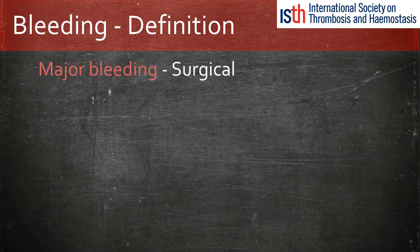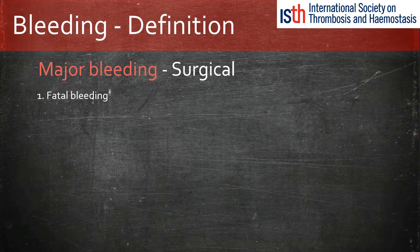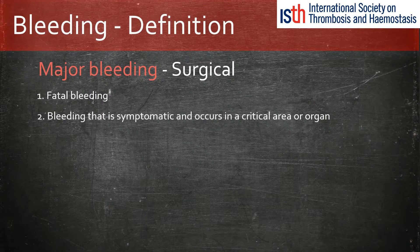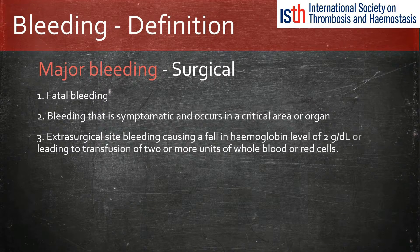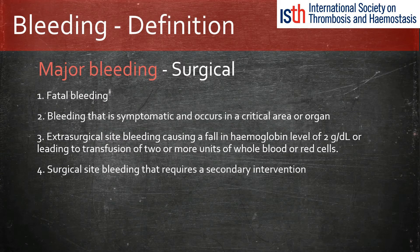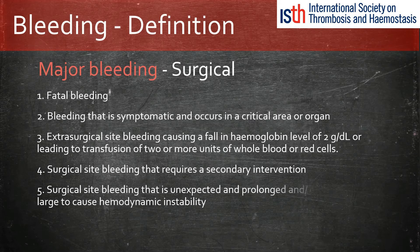Major bleeds, on the other hand, are split into surgical and non-surgical. The surgical definition for a major bleed is one that proves fatal, occurs in a critical area, or extra-surgical site bleeding causing a drop in hemoglobin of 2 grams or below, and a surgical site requiring secondary intervention or bleeding from a surgical site large enough to cause hemodynamic instability.